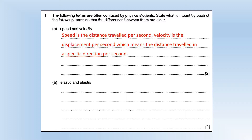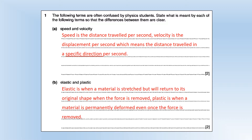Elastic and plastic. Elastic is when a material is stretched but will return to its original shape when the force you're stretching it with is removed. Plastic means it will be permanently deformed once you remove the force.